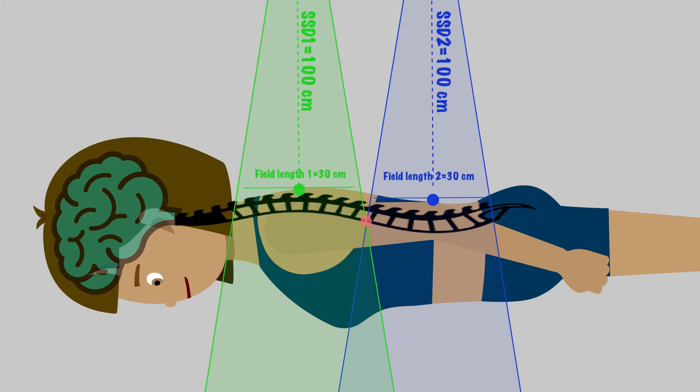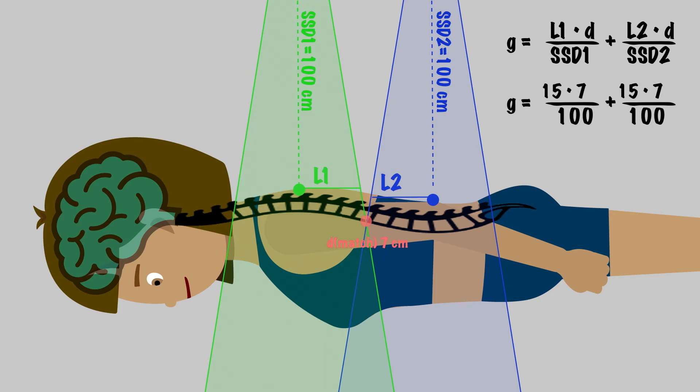Let's use the following data. Field size is 30 by 6 cm in each beam, and our match point is at a depth of 7 cm. SSD is 100 cm. Now we can fill in our formula. L1 is the length from central axis to the edge of the field, so half of 30, which is 15 cm. Since these fields do not have asymmetric jaws, L2 is also 15 cm. In this case, SSD1 and SSD2 are 100 cm. Plugging these values in, we get 2.1 cm. That is the gap on the skin for our posterior spinal fields.